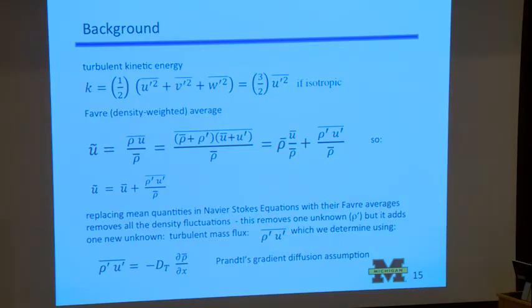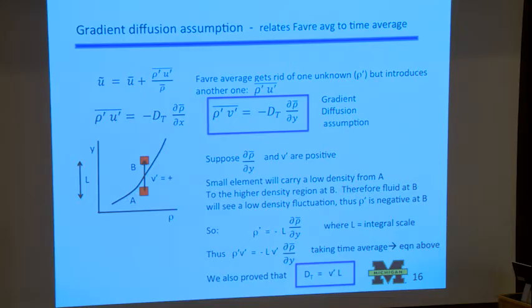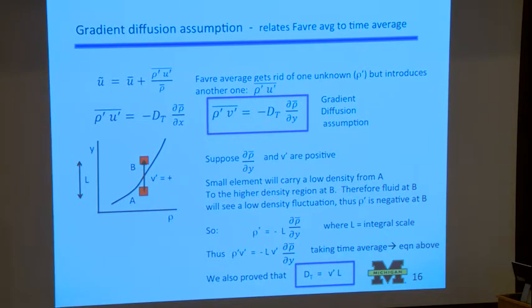But what we do is we solve the equations in terms of tildes, the Favre average quantities. And then at the very end, we use this equation, where we would solve for U bar is equal to U tilde minus this flux term. And so if we want to find out what U bar is, we'd have to know this flux term, and we would use this gradient diffusion assumption, which says that the flux of something is related to the diffusivity times a gradient. And let me expound upon that in the next slide. This is common turbulent flow analysis. It's developed by Prandtl, who is a pretty smart person, and so it's valid.